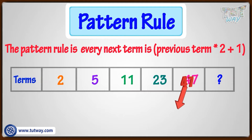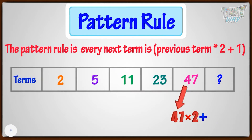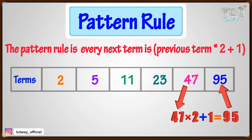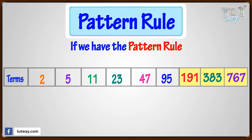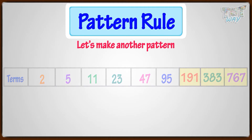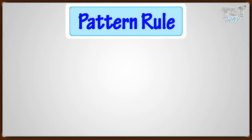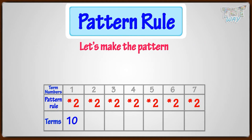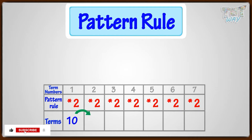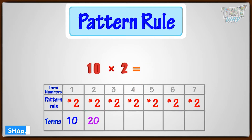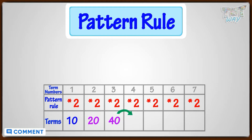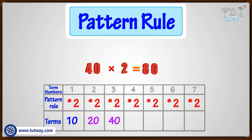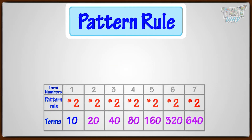The next term would be 47 multiplied by 2 plus 1, giving us 95. If we have the pattern rule, we can find any number of next terms. Now let's make another pattern. Let the pattern rule be: start at 10, multiply each number by 2. Next term: 10 multiplied by 2 equals 20. Next term: 20 multiplied by 2 equals 40. Next term: 40 multiplied by 2 equals 80, and so on.